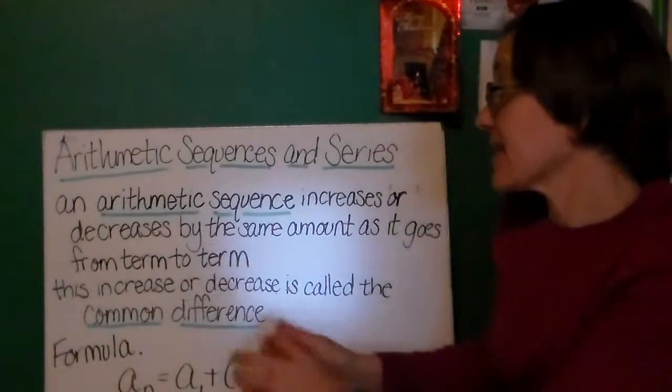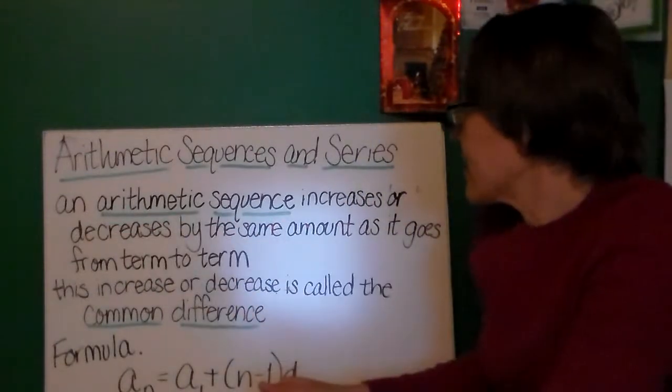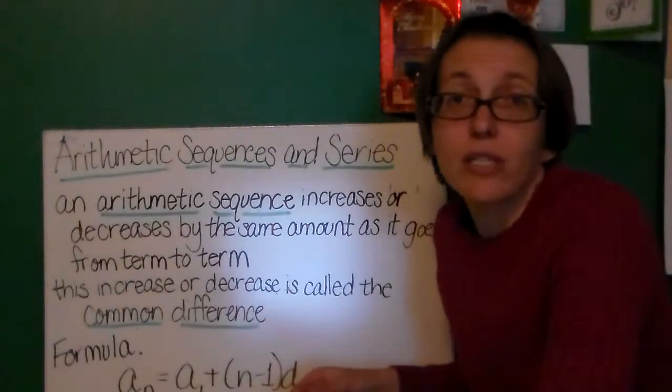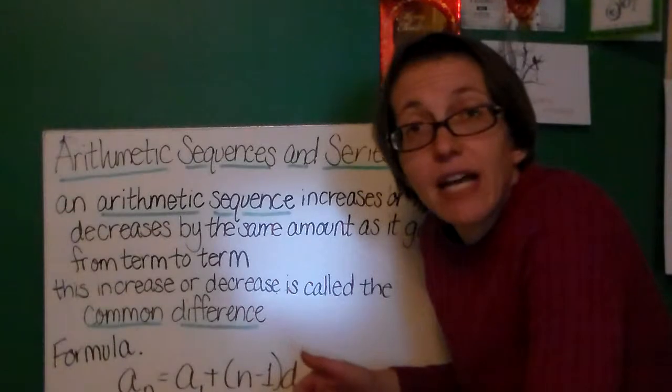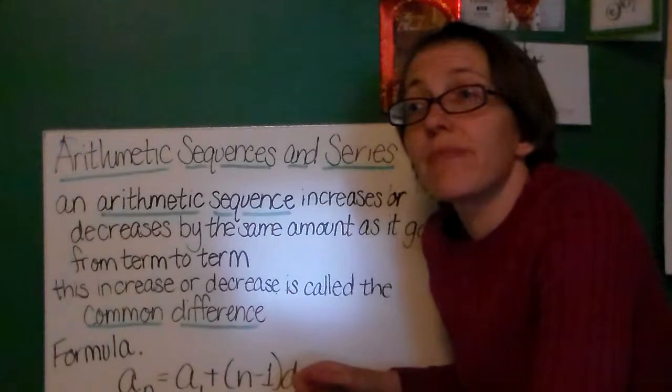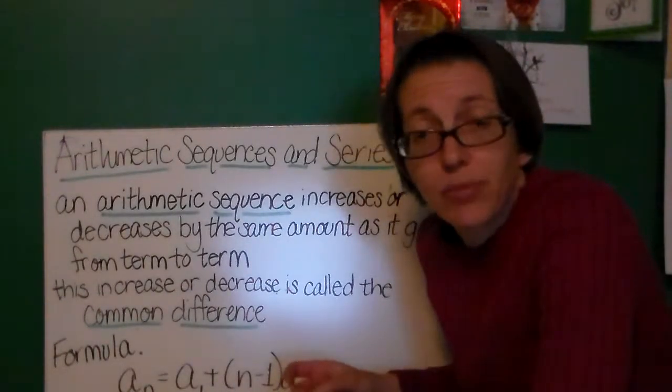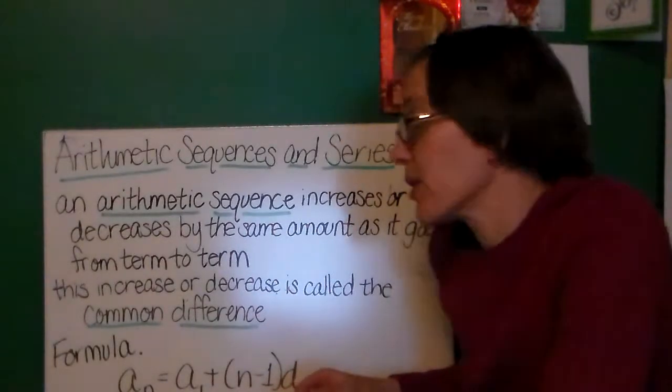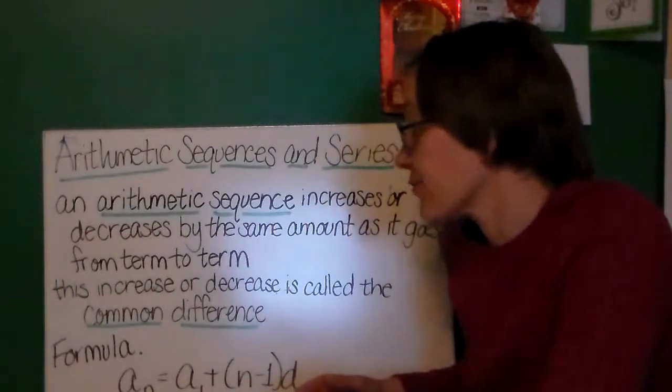An arithmetic sequence, and it is arithmetic and not arithmetic, so an arithmetic sequence increases or decreases by the same amount as we go from term to term. That means, if we were to define it recursively, we would have, in order to get the next term, add this number to your prior term, or subtract this number from your prior term. This increase or decrease is called the common difference.